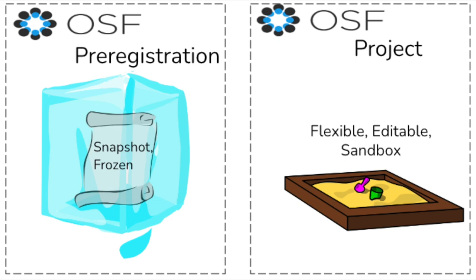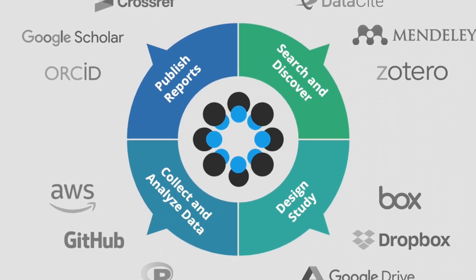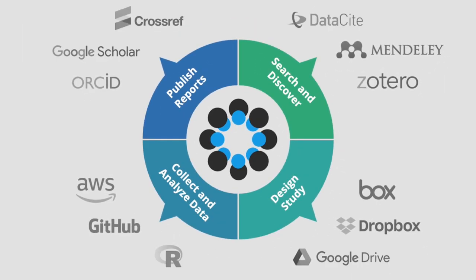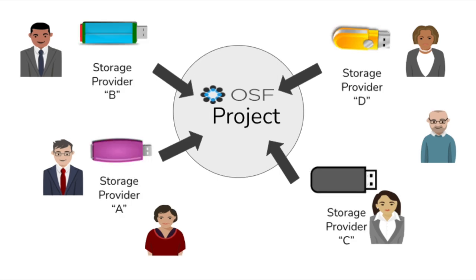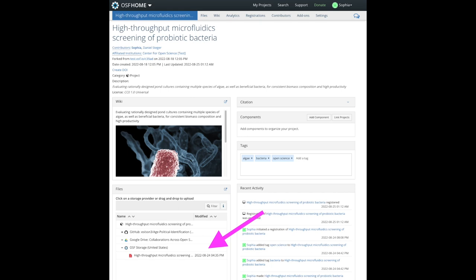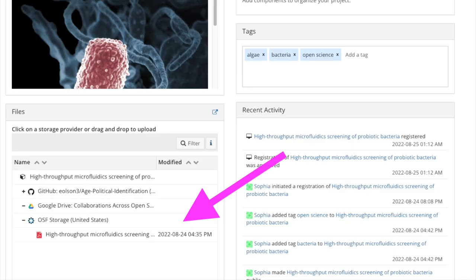In contrast to the pre-registration Sophia created, which is more like a snapshot of her study frozen in time, her OSF project is like a sandbox where work is constantly ongoing. Materials are easily stored, findable, and editable, and recent activity can be tracked by all team members. Sophia is able to integrate her OSF project space into a variety of common external storage providers for uploading data, code, images, or even videos associated with her research project. All files from Sophia and her team on their preferred storage providers can be aggregated together on her OSF project without having to re-upload each file, and each of these files can still be rendered on her OSF project.